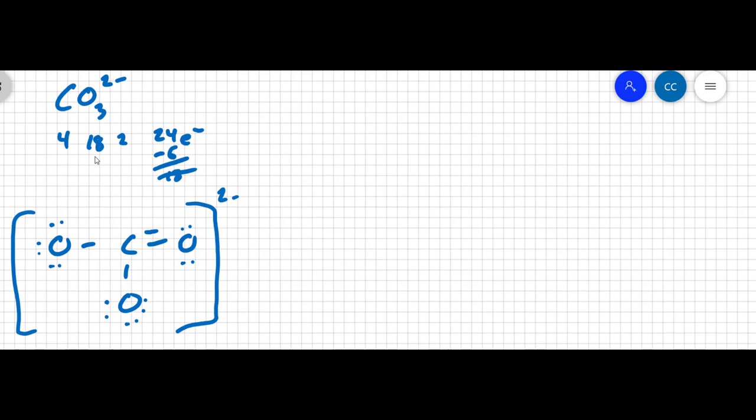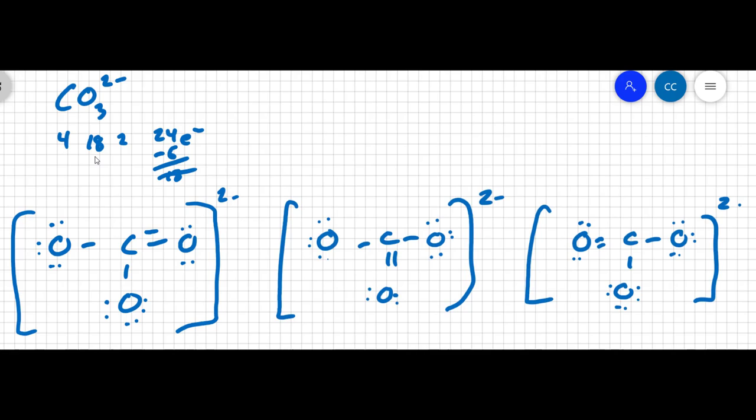Now, I arbitrarily chose this oxygen on the right to make the double bond. I could have just as easily chosen the oxygen on the bottom or the oxygen to the left. In fact, all three Lewis structures are possible. This is what is meant when we say there are resonant structures. There are three possible resonant structures for the carbonate ion. And the bonds actually resonate or vibrate between these different positions. And this has been shown experimentally.